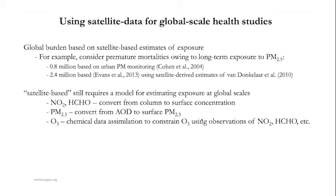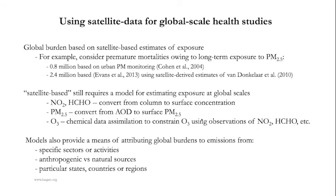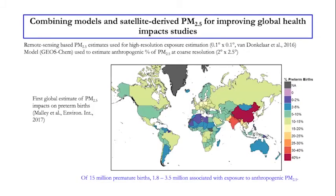There are indirect ways of getting at surface ozone that are quite extensive in terms of research projects. One method is chemical data assimilation — assimilating observations like NO2 and formaldehyde to estimate ozone. Some of the HACAST activities went down this avenue of research. Jessica New and the JPL team has done a lot of this as well. This brings up the importance of not just satellite data alone, but satellite data fused with other information and tools like models. Models provide a means of attributing global burdens we see from space to emissions from different sectors, activities, anthropogenic or natural sources, or emissions from particular countries and regions.